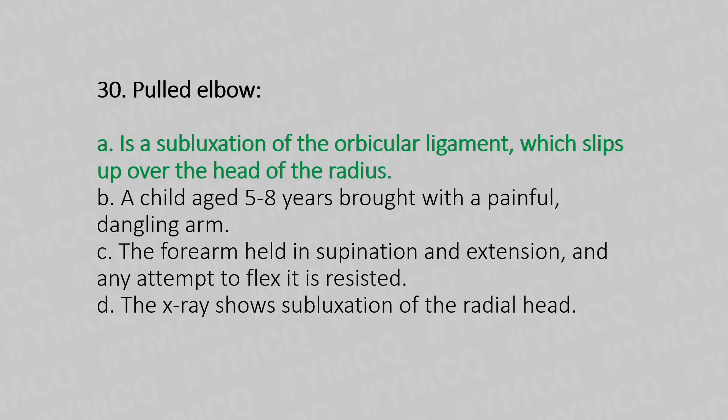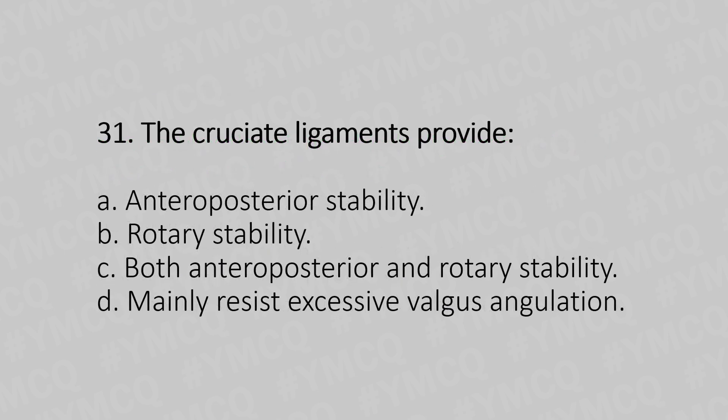Now let's move to question number 31. The cruciate ligaments provide: Option A, anterior-posterior stability. Option B, rotatory stability. Option C, both anterior-posterior and rotatory stability. Option D, mainly resist excessive valgus angulation. And the answer is Option C, both anterior-posterior and rotatory stability.